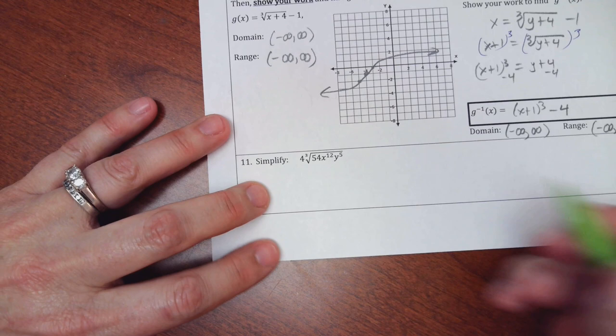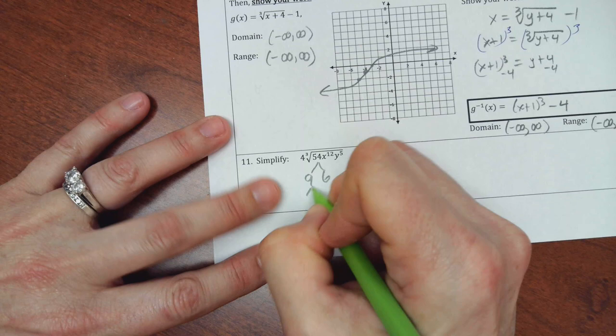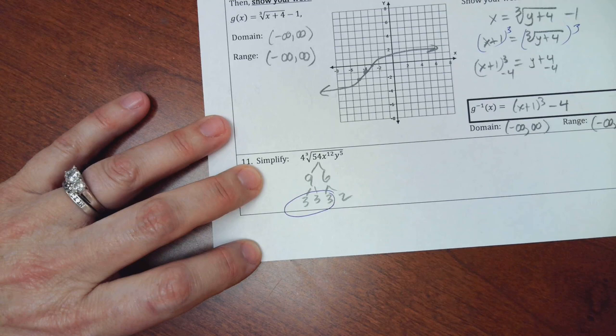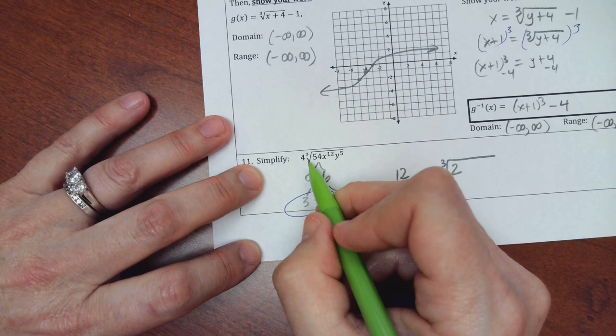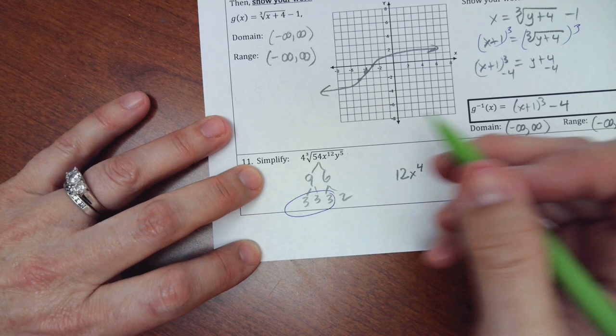Last problem. A little review problem here. 54. Let's see. It's nine times six. Which is three and three. And three and two. So I'm going to get a three coming out. Three multiplies by four makes a twelve. Leave a little space. Put my cube root back with a two. Three goes into twelve. Four times. And no remainder. Three goes into five once. So one y is out. And there are two left. All right. That is it. Thank you.